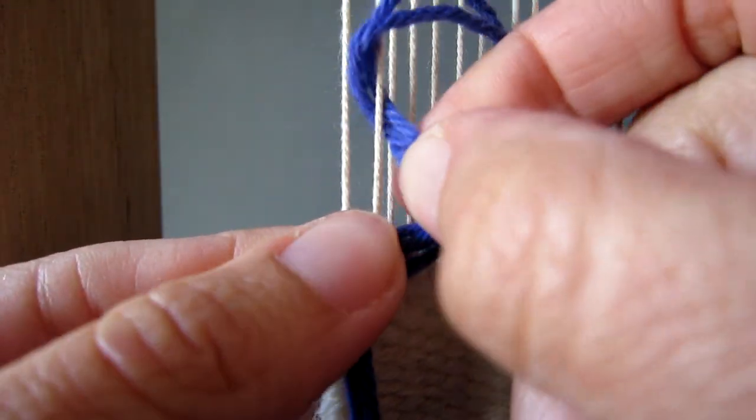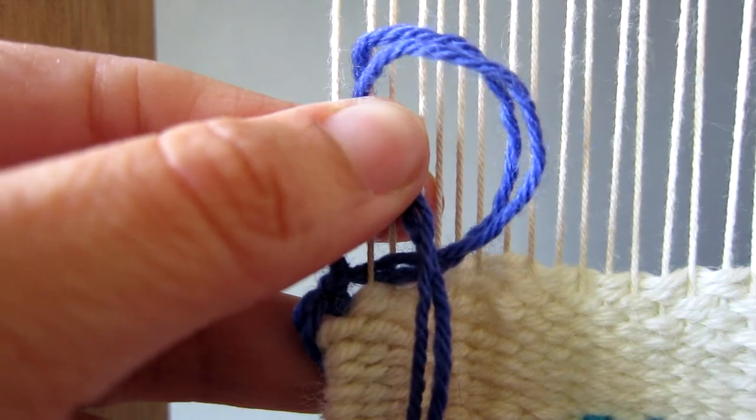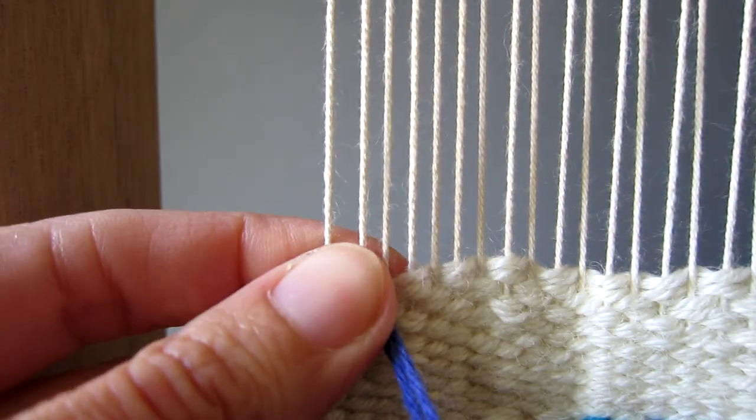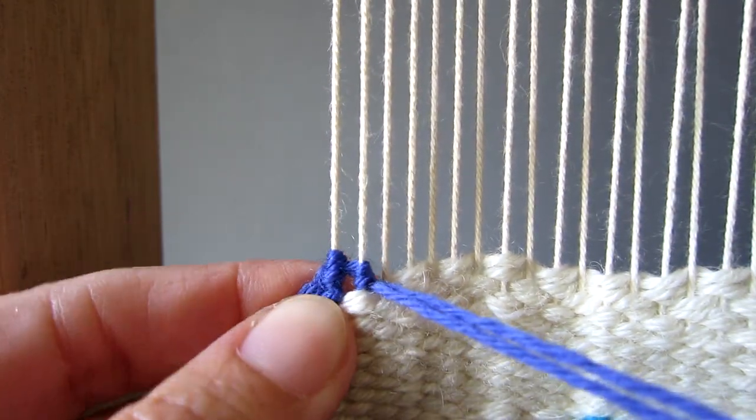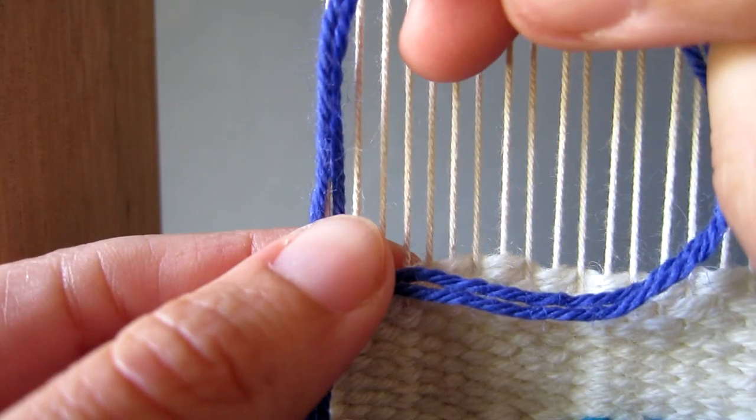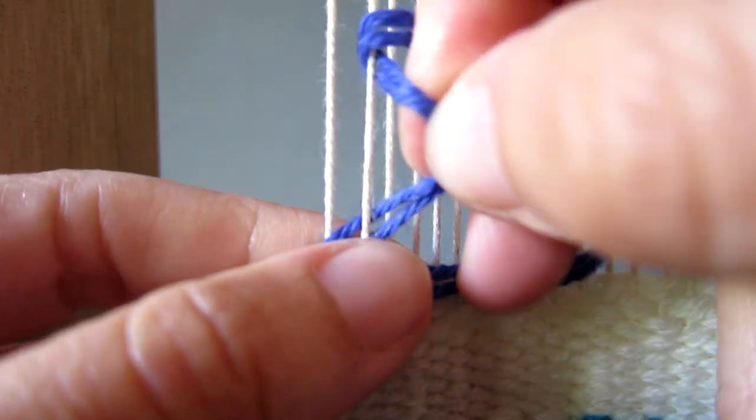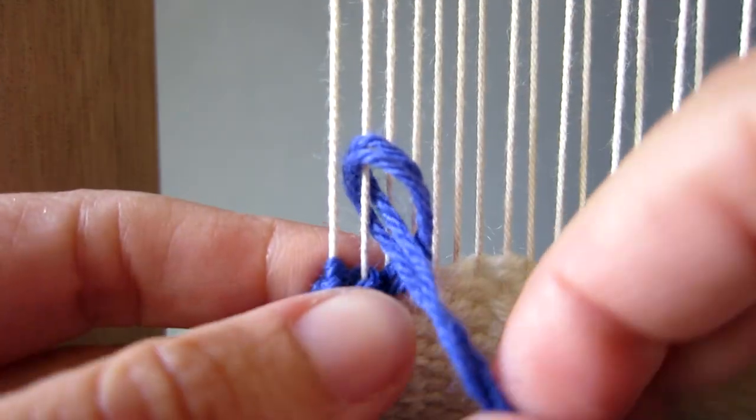Now we make the first half hitch knot, making sure you don't pull too tightly so that the warp threads remain evenly spaced. Next we make the second half hitch knot and pull it firmly downwards to tighten the double half hitch knot.